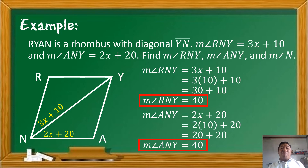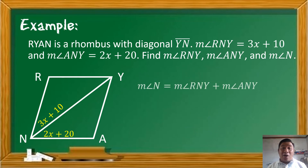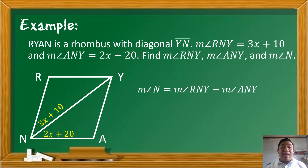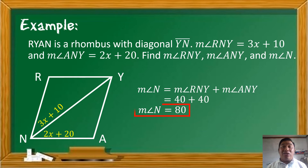Ang kulang na lang natin is the measure of angle N. Ang kailangan lang nating gawin is to add the smaller angles na nabuo. So, the measure of angle N is equal to the measure of angle RNY plus the measure of angle ANY — that would be 40 plus 40 — and 40 plus 40 is equal to 80. Therefore, the measure of angle N is equal to 80.